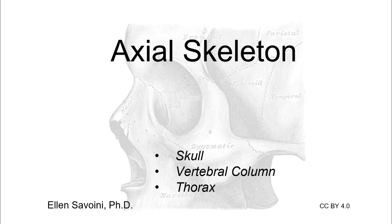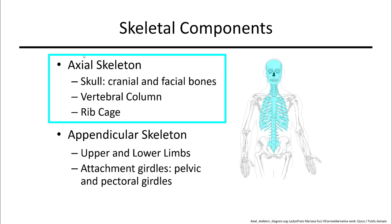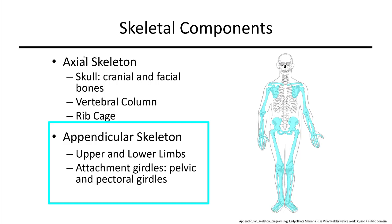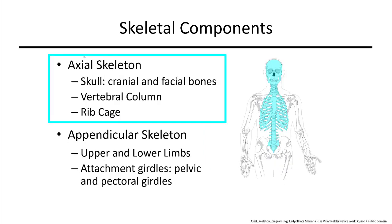We'll talk about the axial skeleton. The axial skeleton includes the skull, vertebral column, and ribcage, while the appendicular skeleton includes our upper and lower limbs as well as their attachments, the pectoral and pelvic girdles. The focus at this point is the axial skeleton.